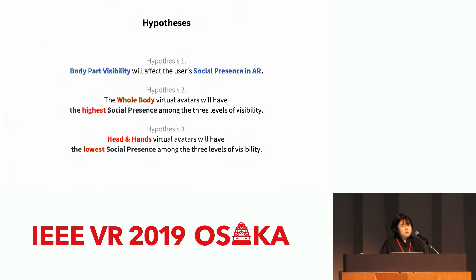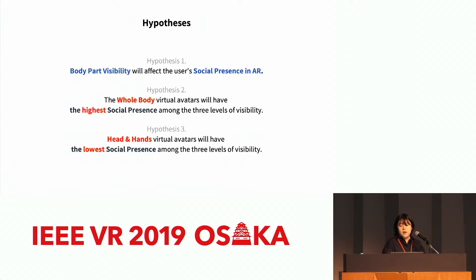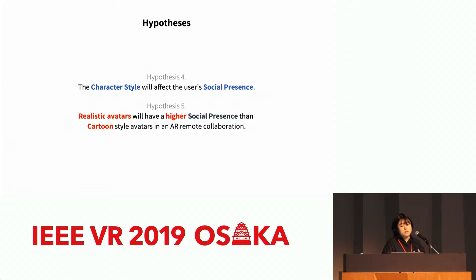Here are our hypotheses. Hypotheses one, two, and three are related to the first factor, body part visibility. Hypothesis one is that the body factor will affect social presence in AR. Hypotheses two and three predict that whole body and head-and-hands will have the highest and lowest social presence, respectively. Hypotheses four and five are related to the second factor, character style, and we hypothesized that a realistic style would have higher social presence, based on results from previous research.